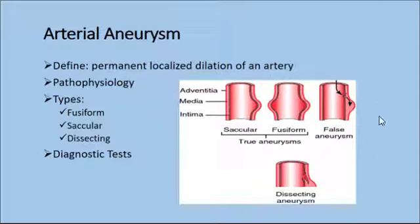Your text talks about the different types. It is a permanent localized dilation of an artery. Pathophysiology is an enlargement of the artery. The tunica media, or the middle layer, where the smooth muscle and elastic tissue is located, becomes damaged. It's a progressive dilation, leading to degeneration, and the more degeneration, the higher the risk of a rupture.